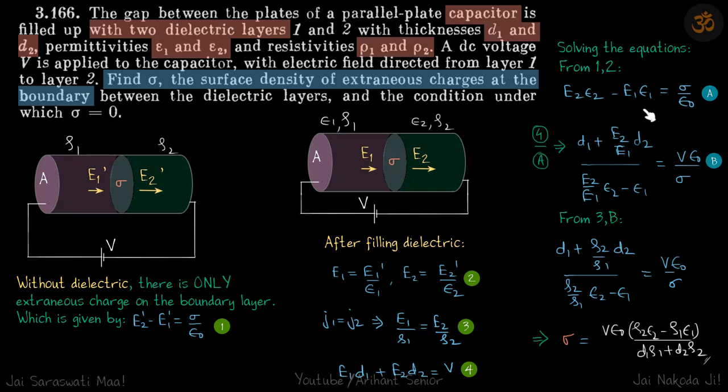Now, this equation and fourth equation if we divide we get the ratio of E2 by E1 and that ratio is given in third. 4 by A will give the equation in which we have a ratio of E2 by E1 and from third we will put the value of E2 by E1 and we have got rid of all the variables except sigma. We get our answer sigma is equal to this.